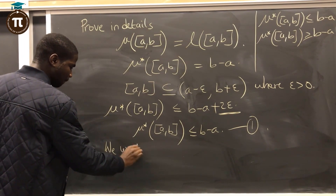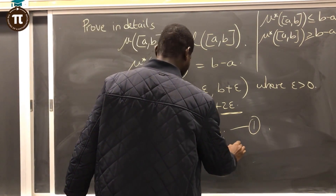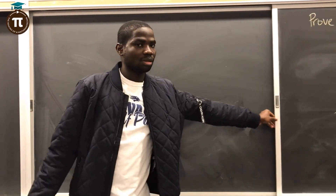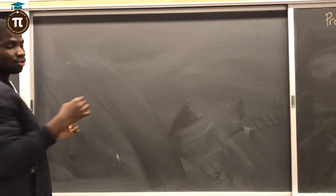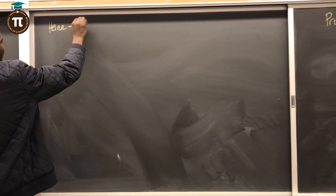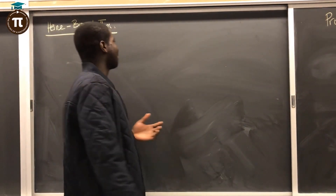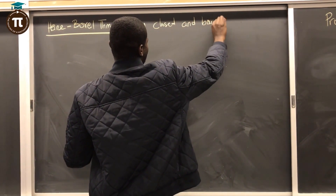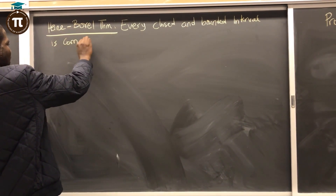For the second part, we need to prove that the outer measure of the closed interval [A,B] is greater than or equal to B minus A. To do this, we first recall the Heine-Borel theorem, which states that every closed and bounded interval is compact.